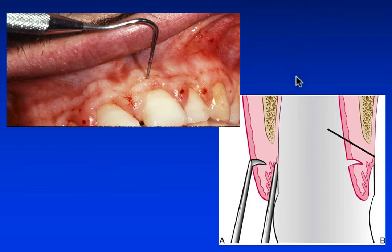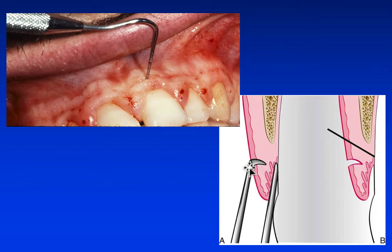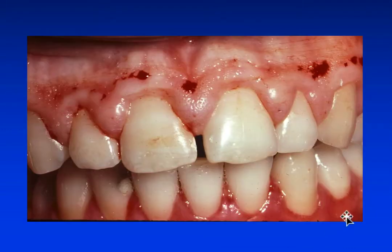The cartoon is diagramming an instrument known as a pocket marking forcep. This pocket marking forcep has a periodontal probe, which determines the depth, and on the opposite side is a metal point which penetrates the gingiva to establish these bleeding points. Here you can see where all of those pocket measurements have been made and the bleeding points established in order to conduct our incision.